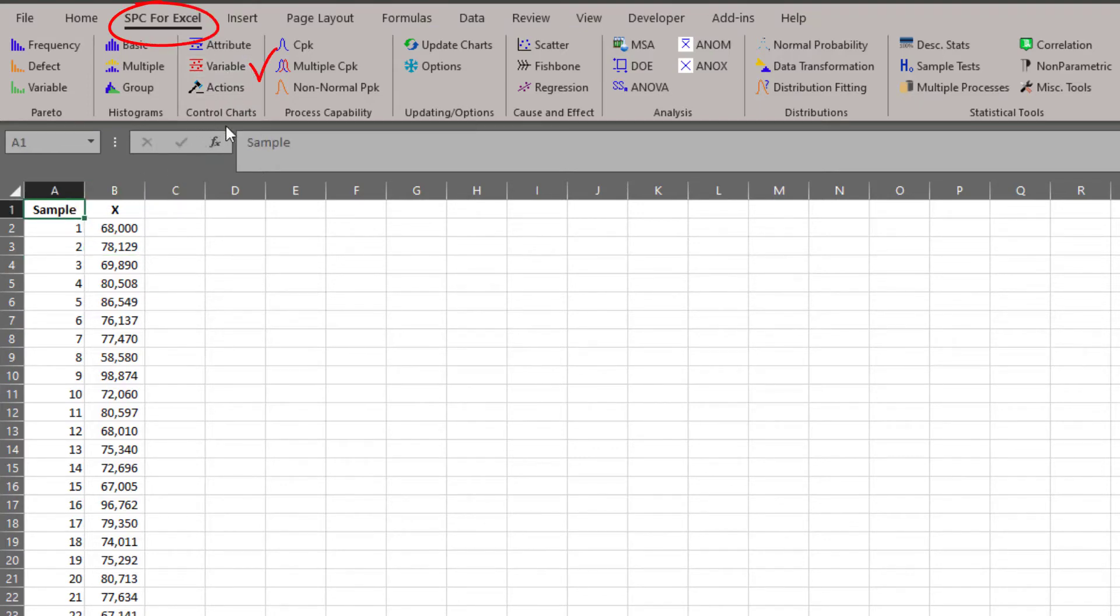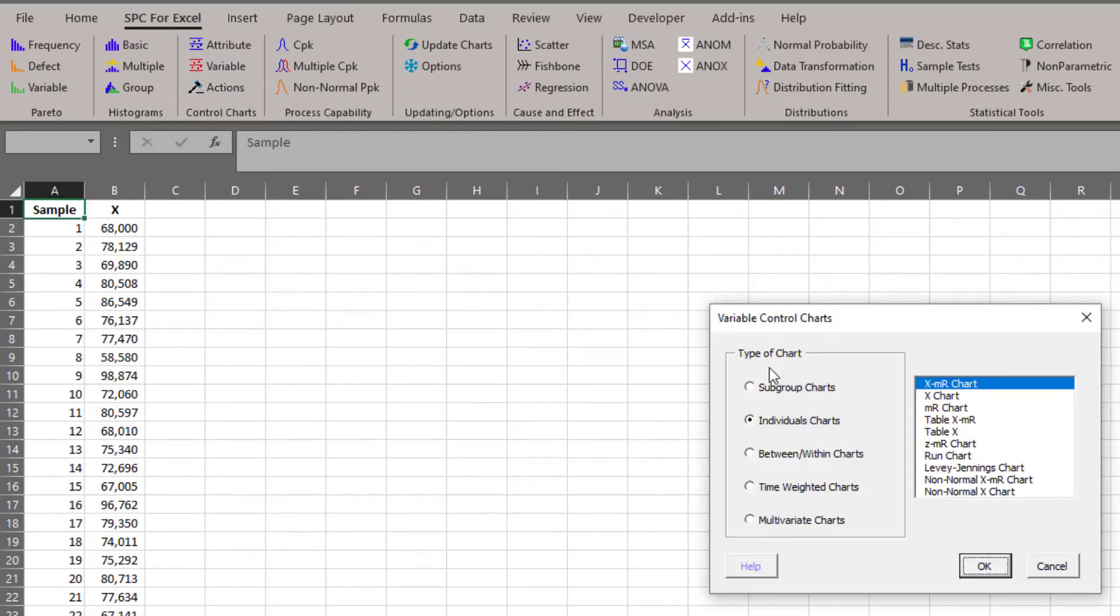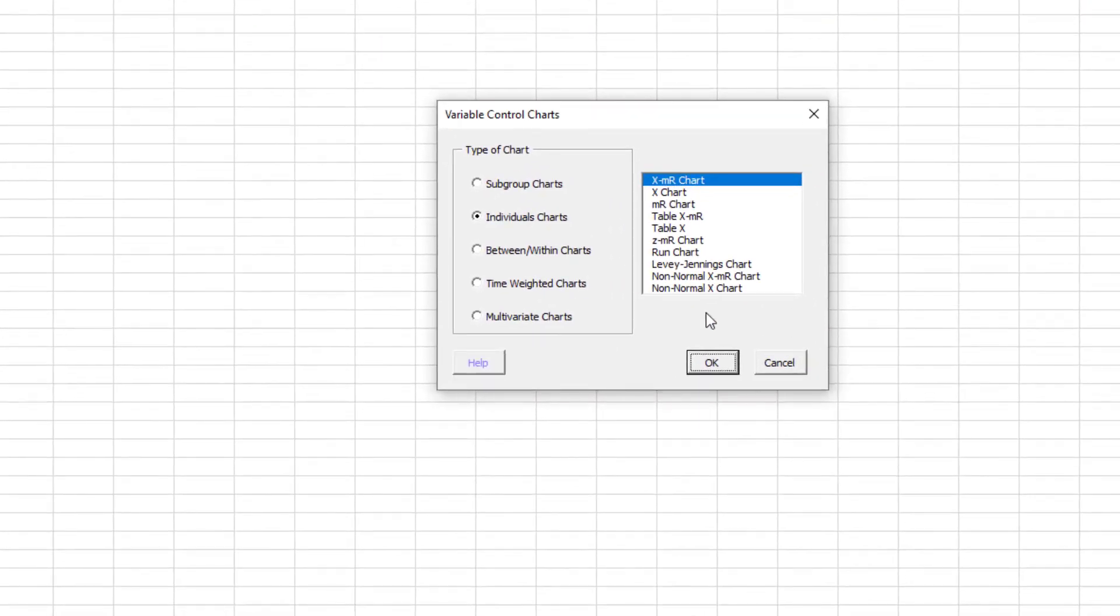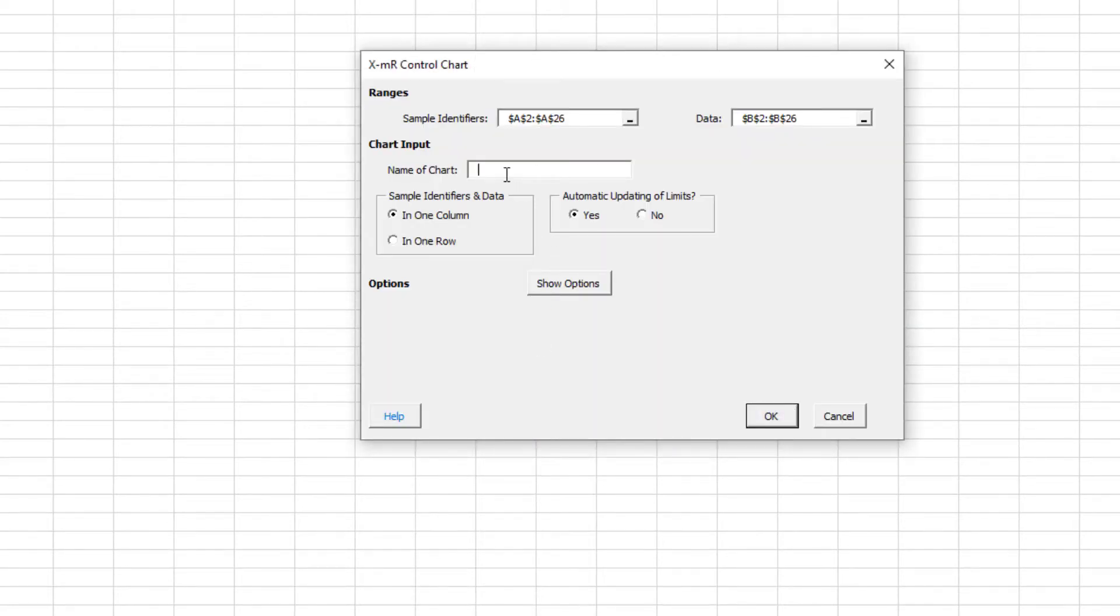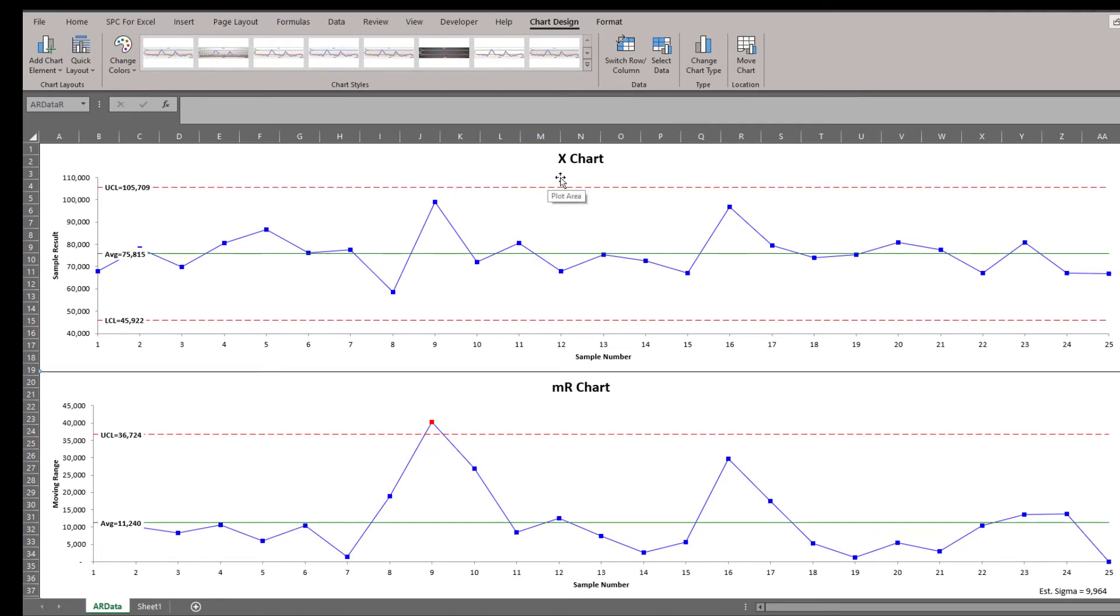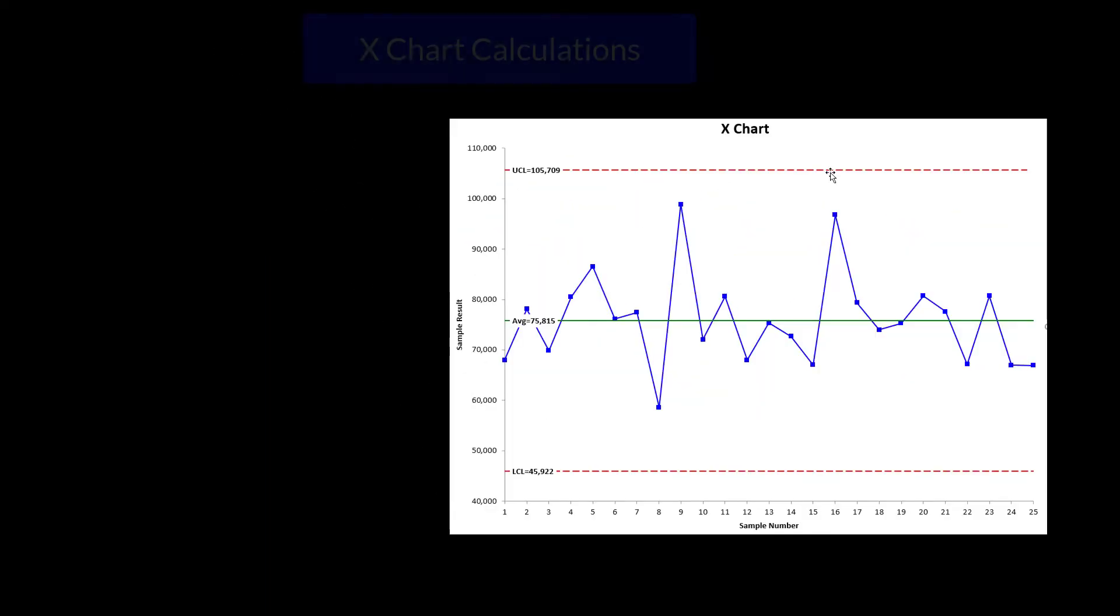We're going to select the variable chart, control chart option. And it comes up and it tells you we're going to use the individuals chart. You select OK. And all you have to do is add a name of the chart. We're going to call it AR Data. And then we select OK. And the software generates the individual chart for you. And the X chart is on top, the moving range chart on the bottom. And so the points are plotted over time. The average is in control limits added. Any points that are out of control are in red. And you can see there's one point beyond the control limit on the moving range chart. The X chart looks like it's in control.